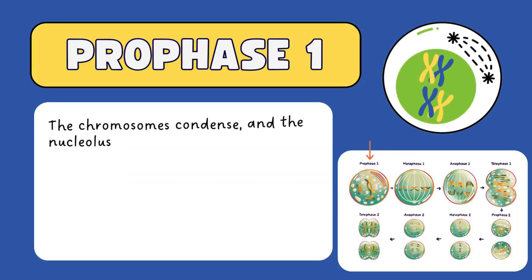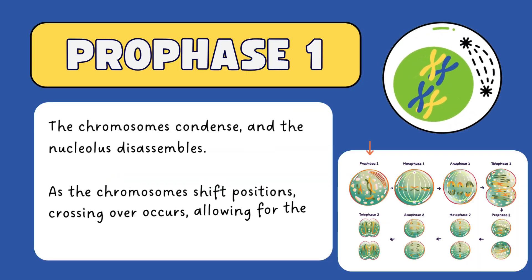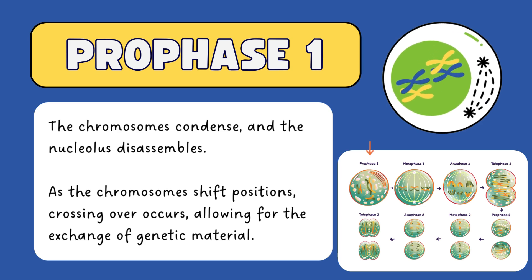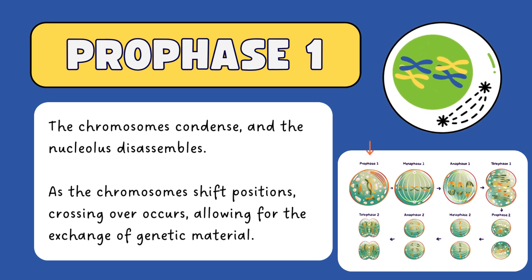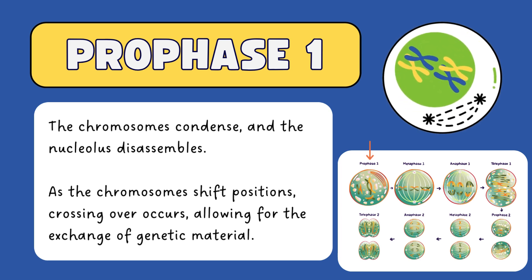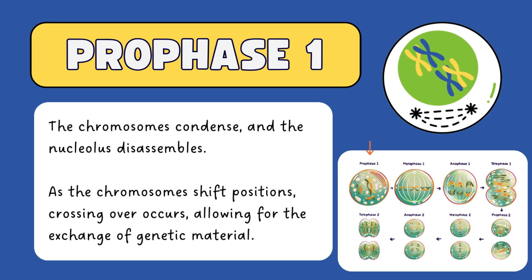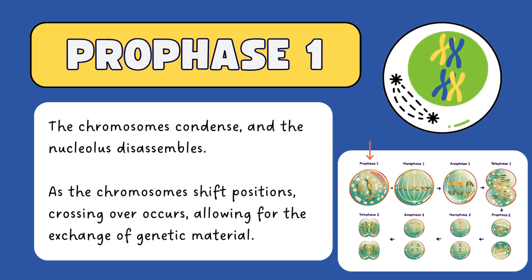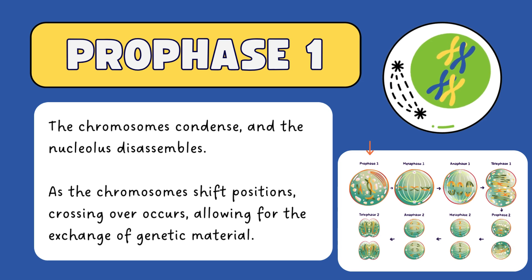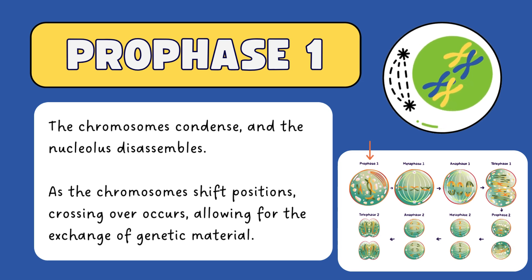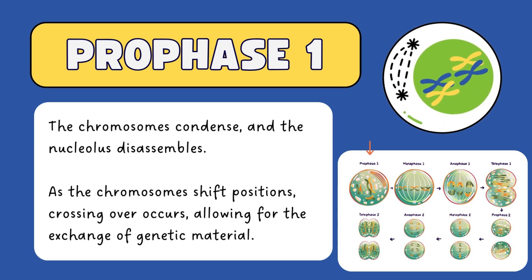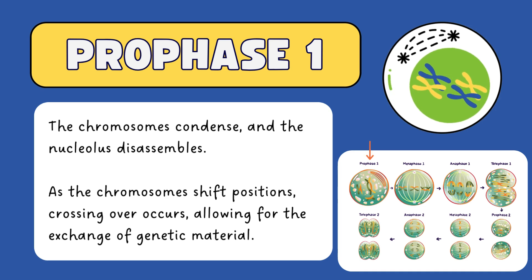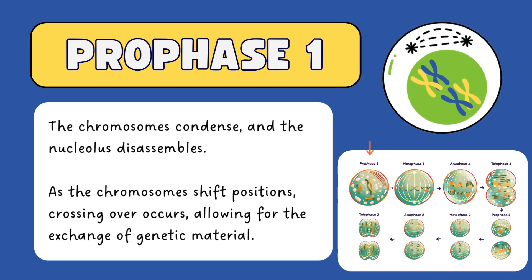In prophase I, the chromosomes begin to condense and the nucleolus disassembles. As the chromosomes shift positions, a process called crossing over occurs, allowing for the exchange of genetic material between homologous chromosomes. This is a key mechanism that contributes to genetic diversity.